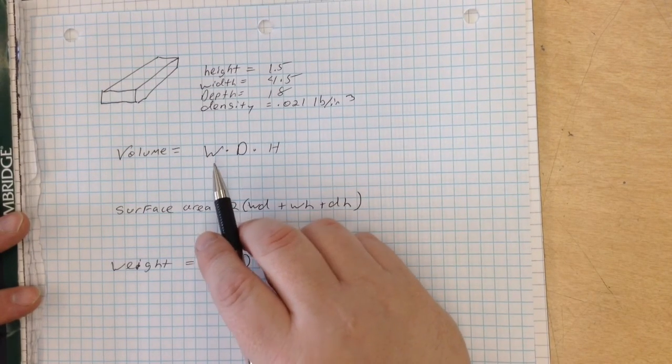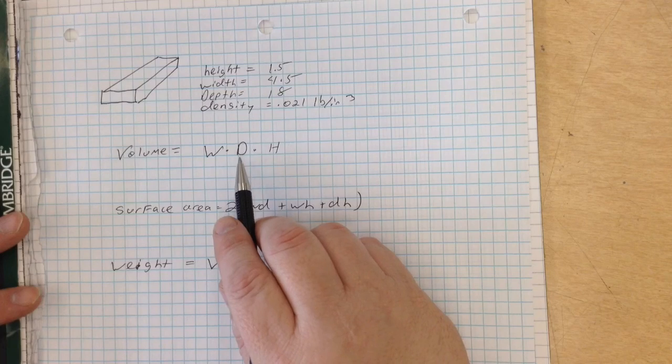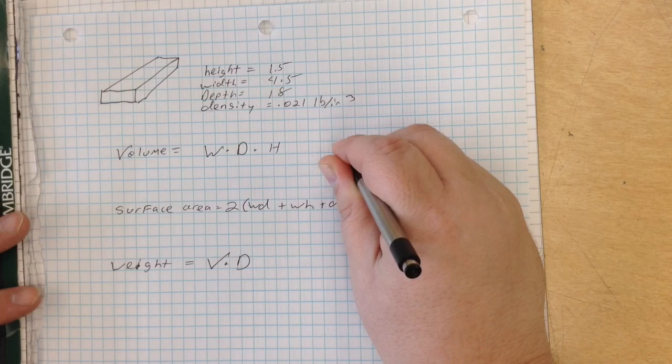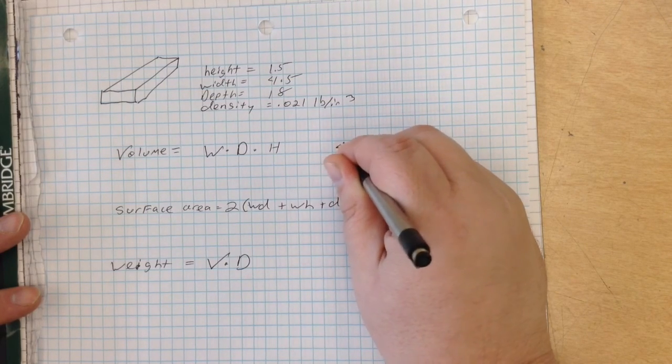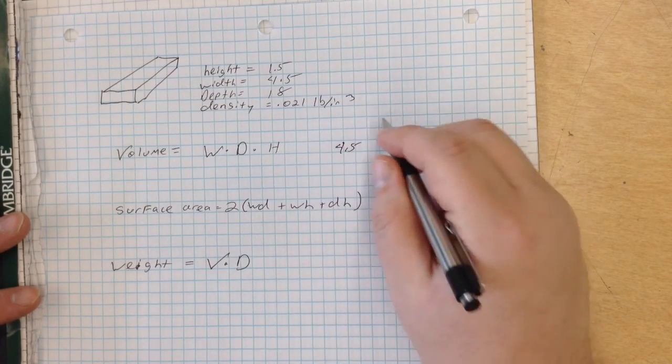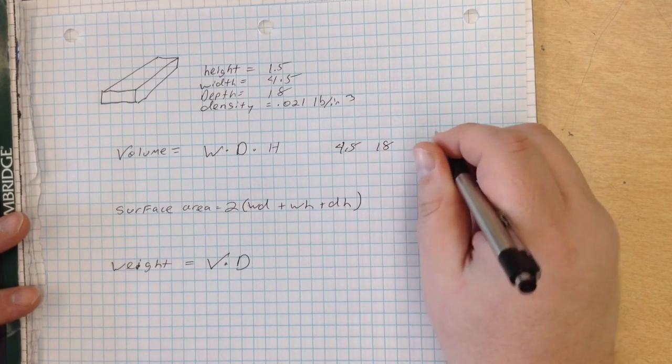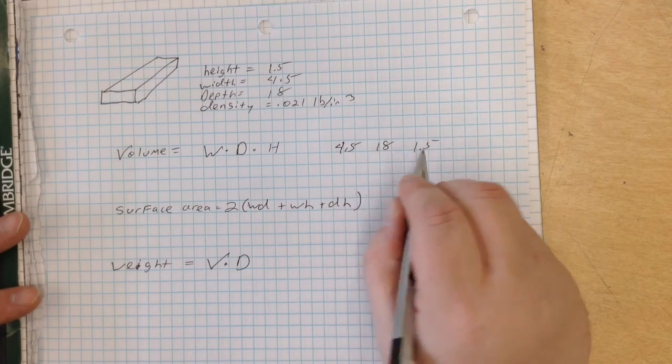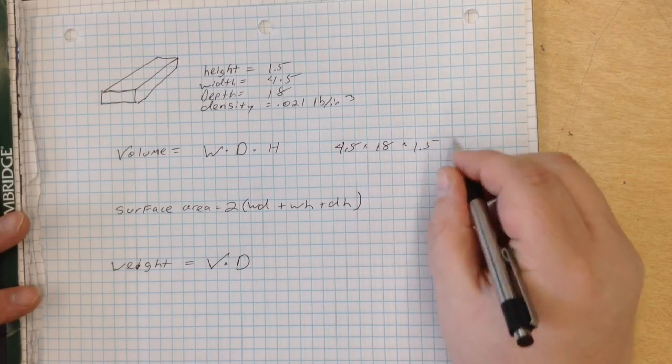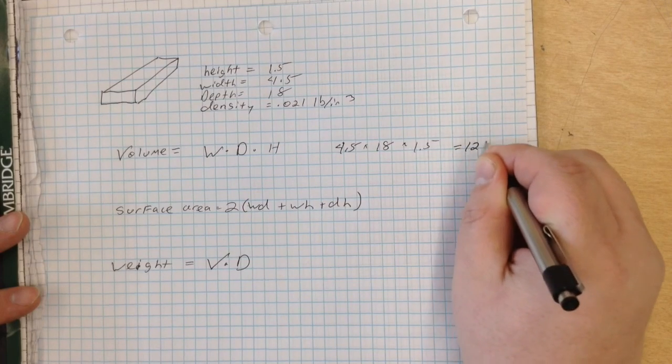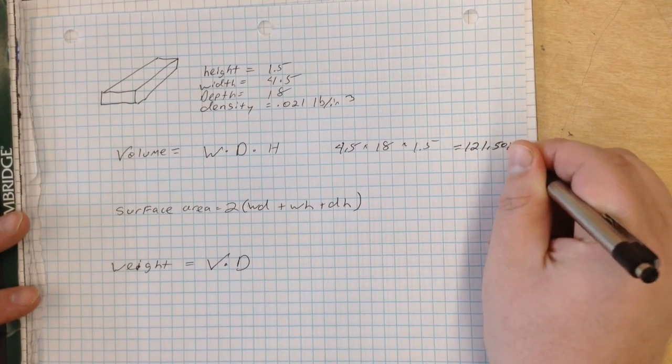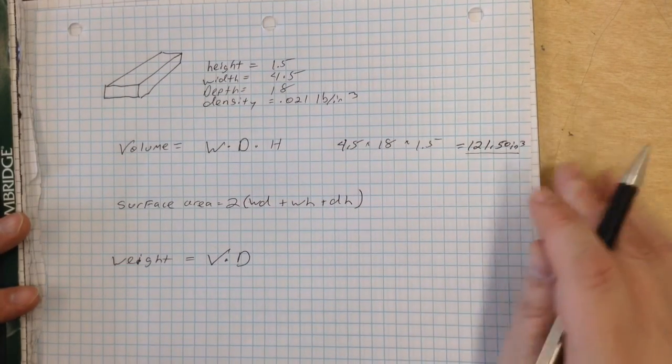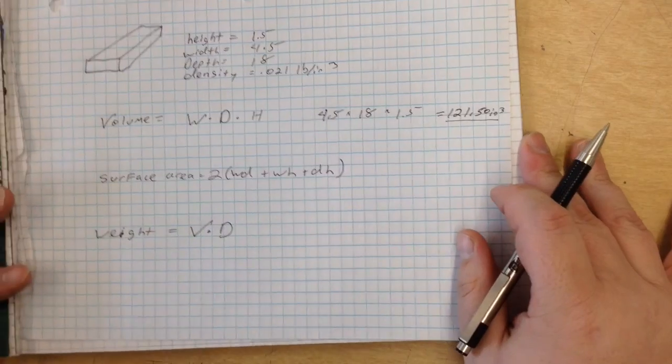So let's get into the volume. The volume is width times depth times height. Our width is 4.5, and our depth is 18, and our height is 1.5. When we multiply these three numbers together, we are given 121.50 inches cubed. So our volume for this particular board is 121.50 inches cubed.